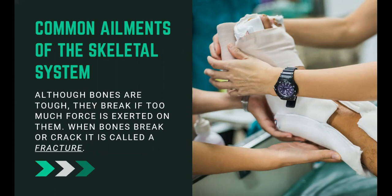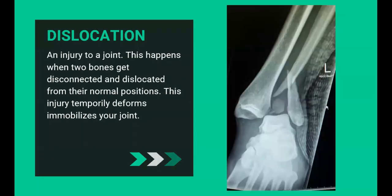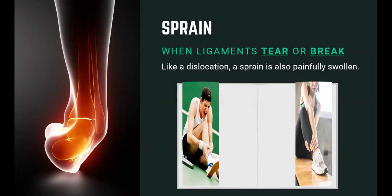Now we move on to the common ailments of the skeletal system. Although bones are tough, they break if too much force is exerted on them — this is called a fracture. Another ailment is dislocation, an injury to a joint where two bones get disconnected from their normal positions, temporarily deforming or immobilizing the joint. A sprain is when ligaments tear or break, and like a dislocation, it is also painfully swollen.